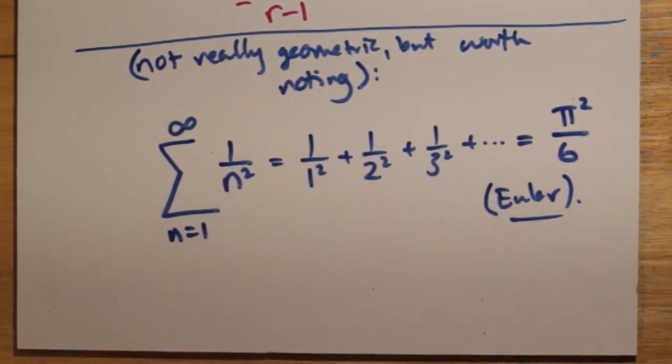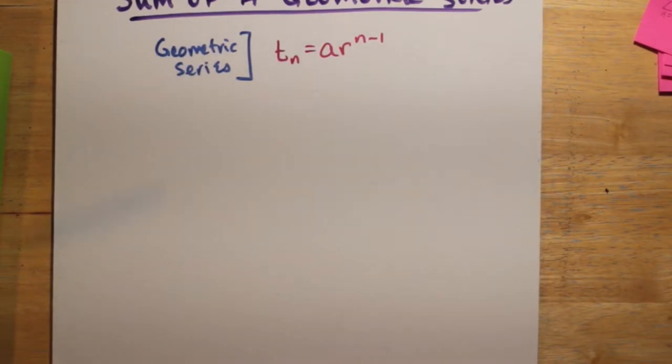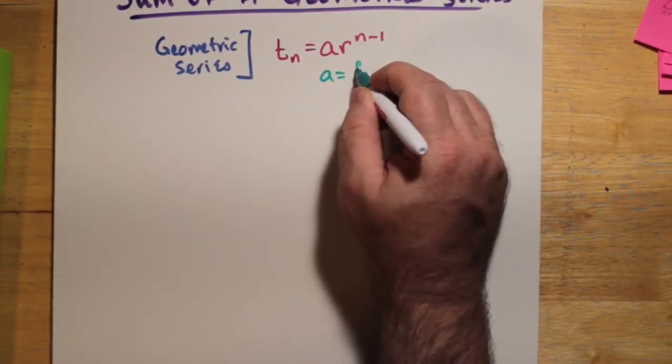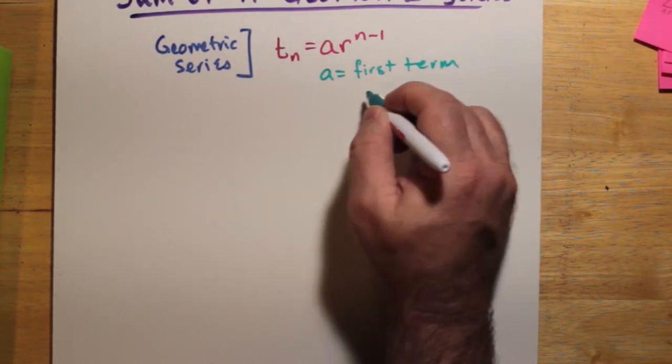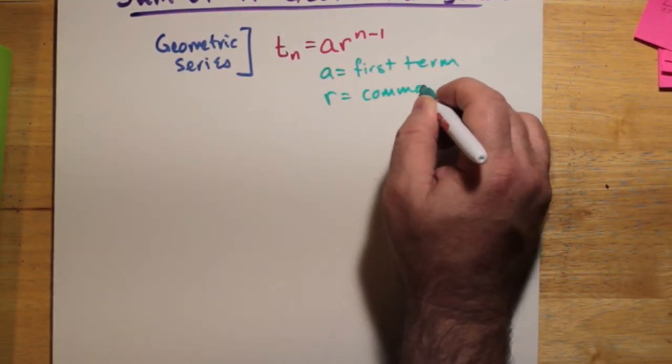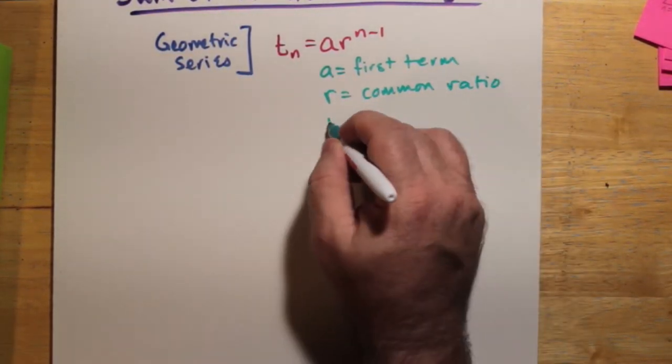So, what about the geometric series or the geometric sequence? That's a times r to the power of n minus 1. a remembers your first term. r now is your common ratio. And n is whatever the term number is.